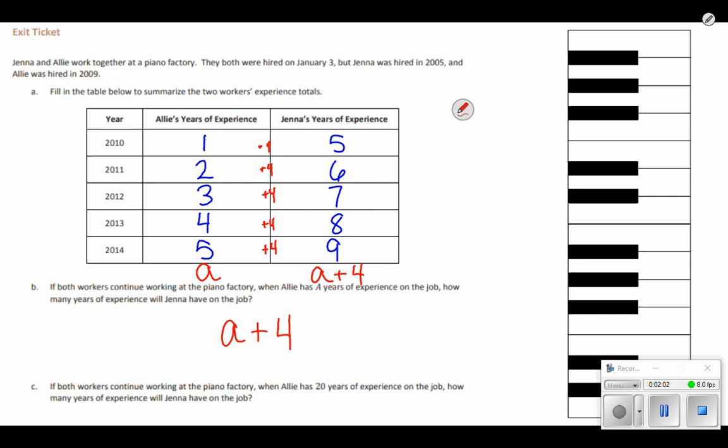So if both workers continue at the piano factory, when Allie has 20 years of experience on the job, how many years of experience will Jenna have on the job? Well, A plus four, when I use my substitution, A is 20, plus four is Jenna will have 24 years on the job.